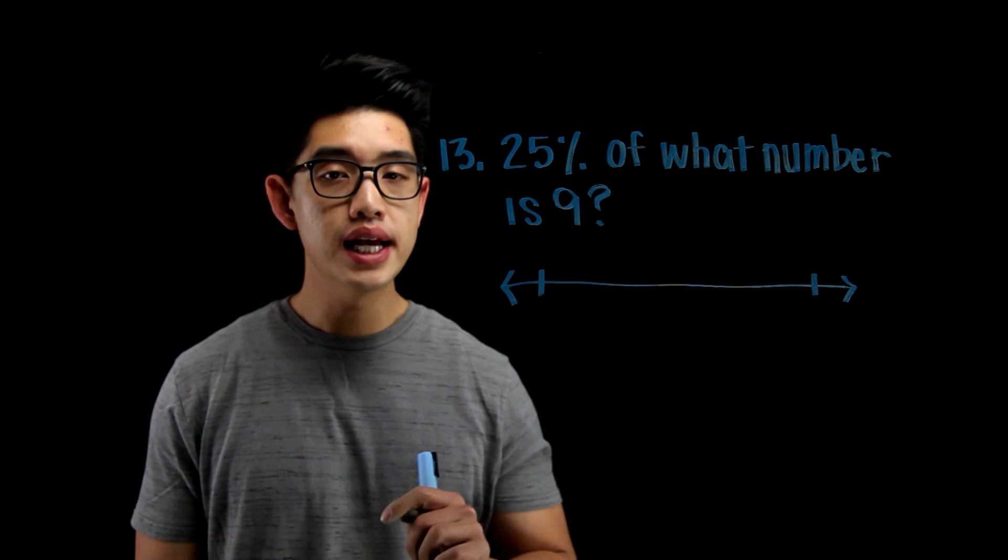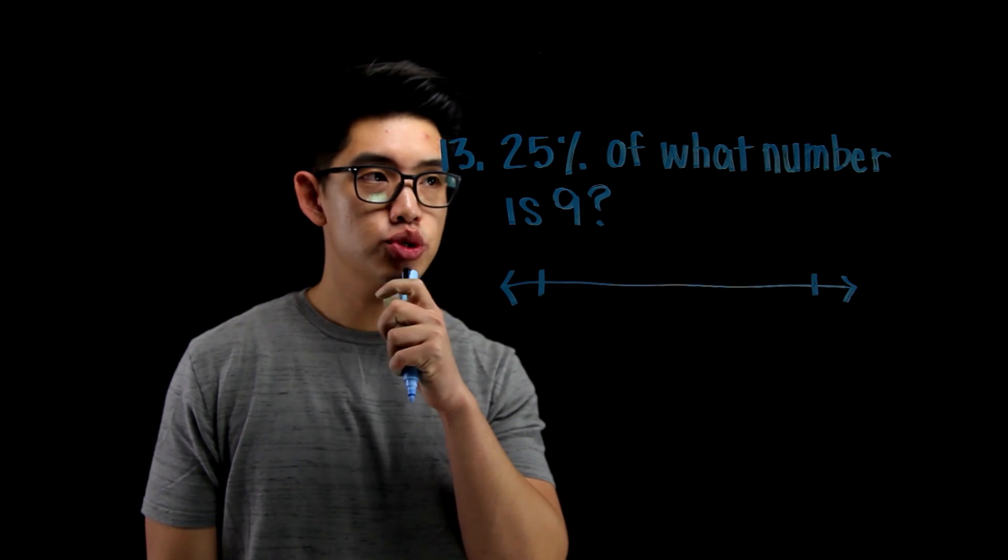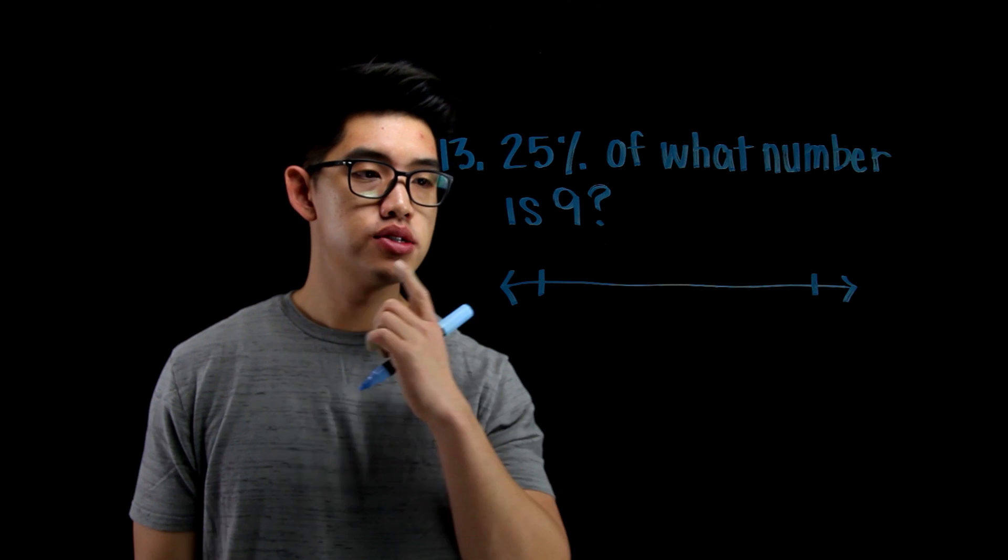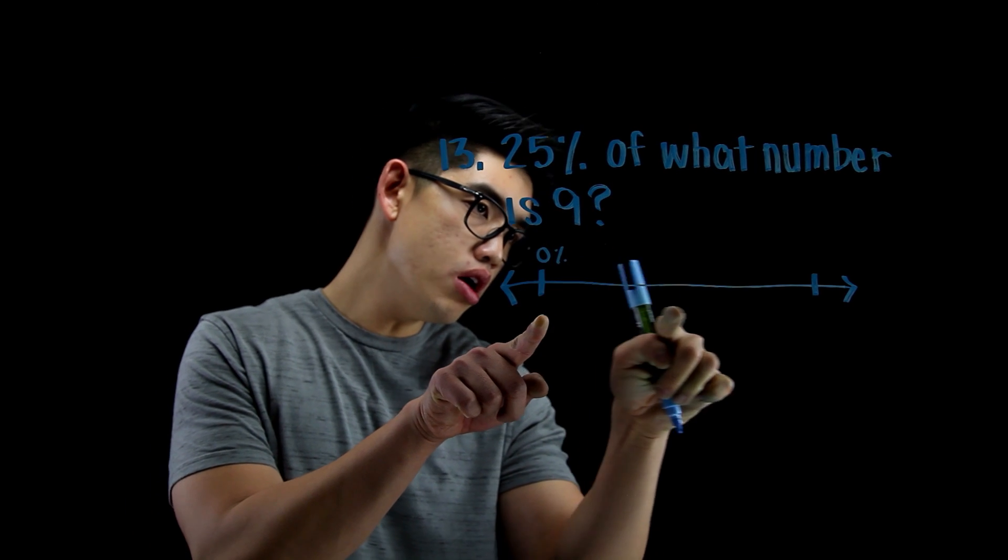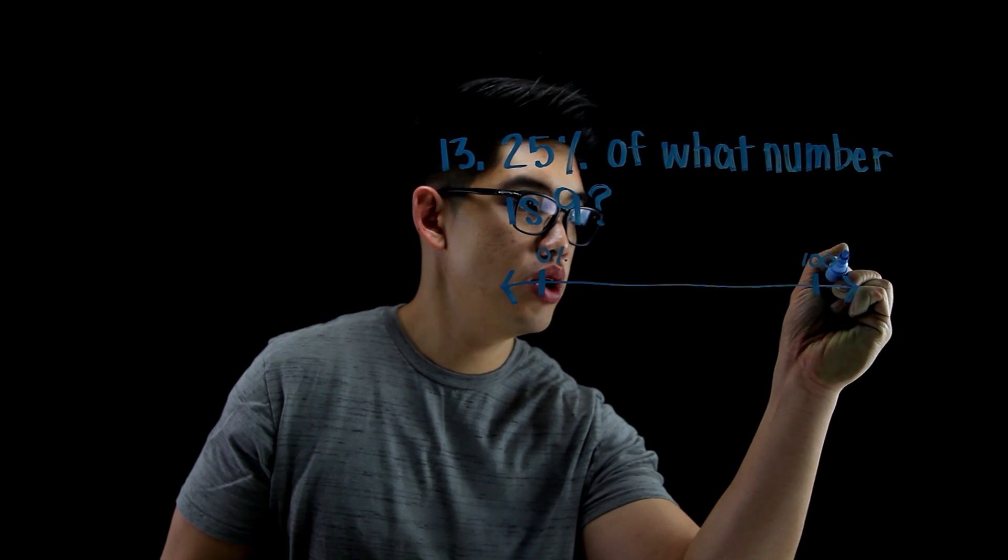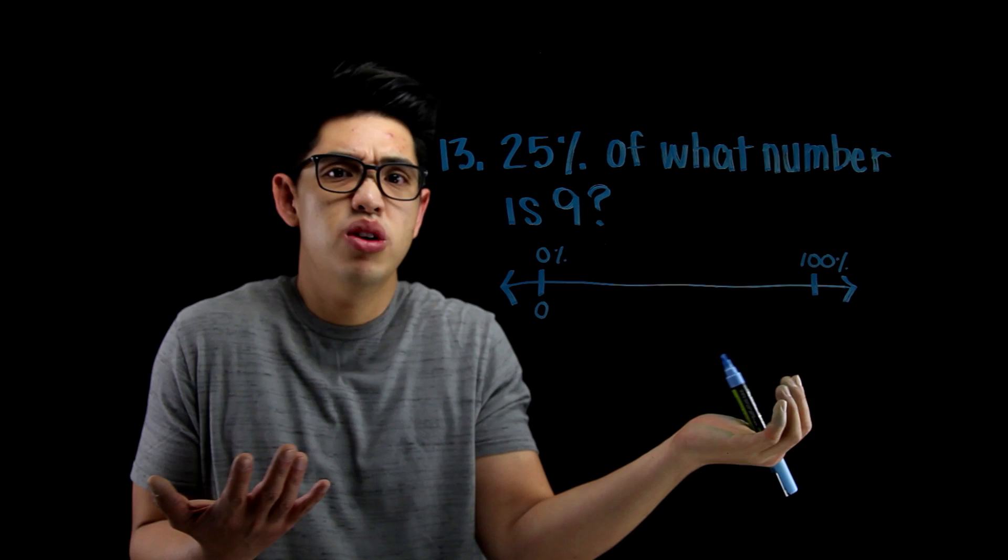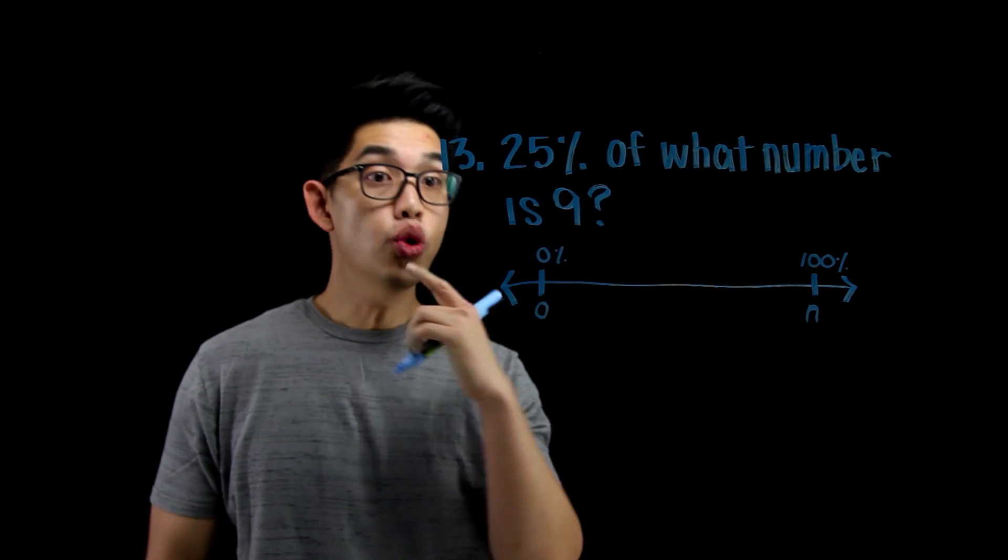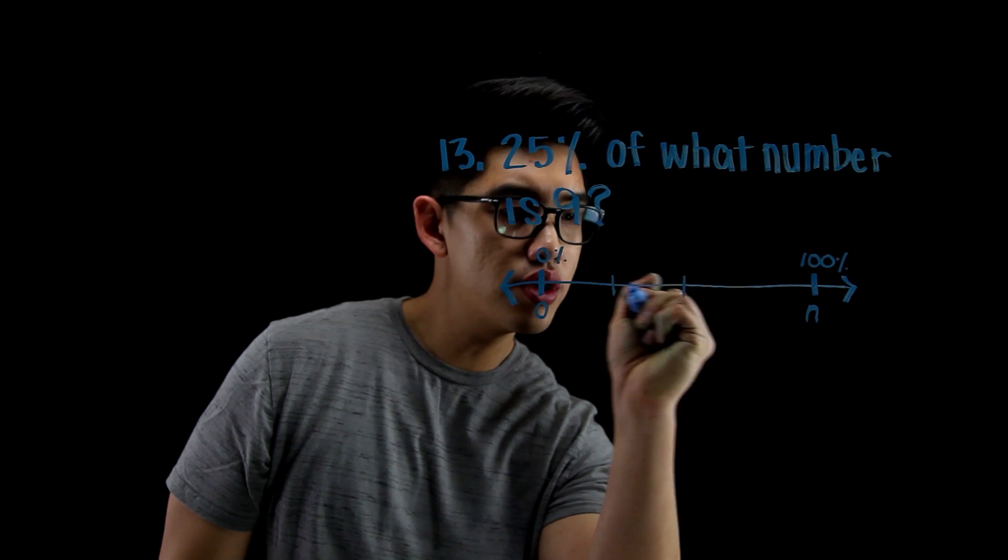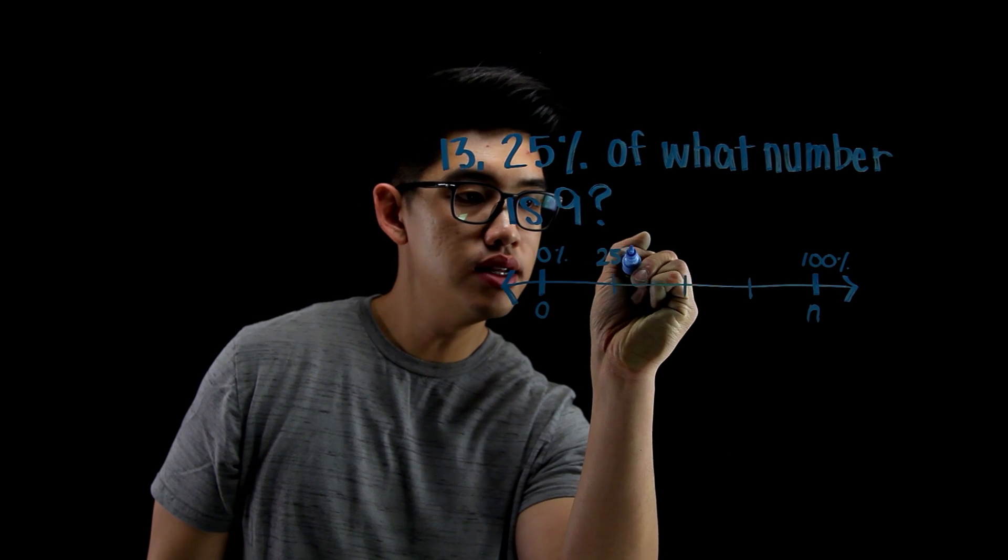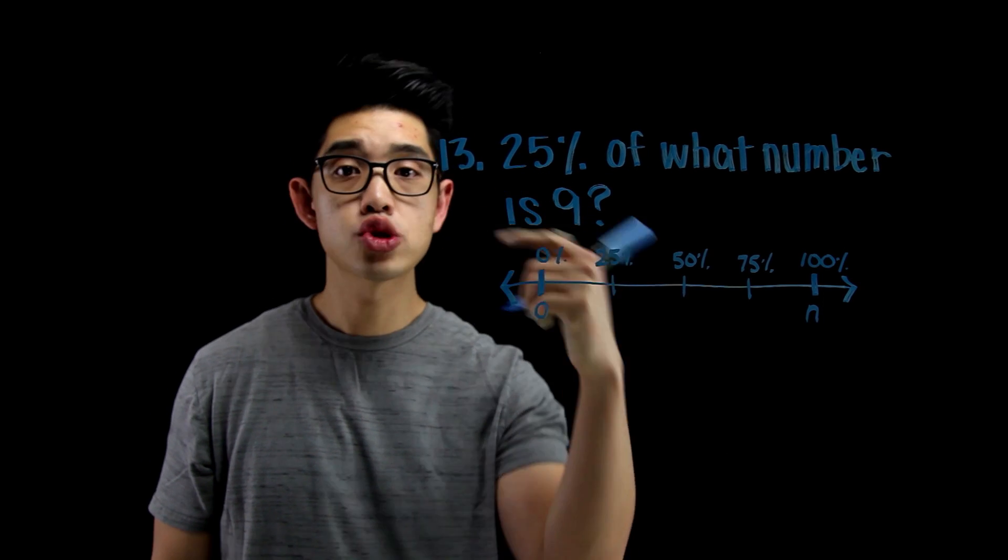For number 13, it says 25% of what number is 9? 25%, a small portion of this huge number is 9, and I'm trying to figure out what that huge number is. So what I'm going to do is I'm going to use the number line method. I can say that this is 0%. And from here, all the way over there, that's going to be 100% at the very end. And I know this number is going to be 0. And I'm trying to figure out what that huge number is. I don't know what that number is. I'm going to put n because I don't know what it is. And I know that 25% is the same thing as 9. I'm going to cut this into quarters. I know that this is 25%, this is 50%, and this is 75%.